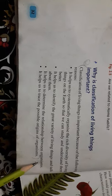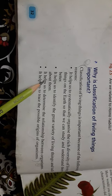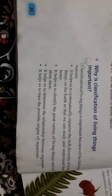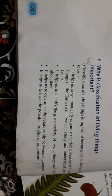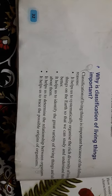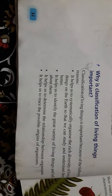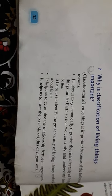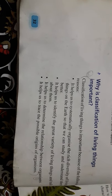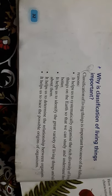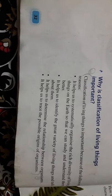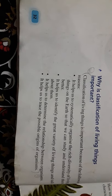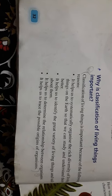Number three: classification helps us to determine the relationship between organisms. You can determine how two organisms are related to each other, how closely they are related. With the help of classification, organisms that are closely related to each other and share characteristics are kept in one group.